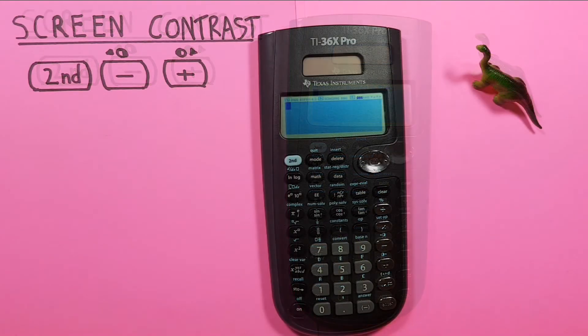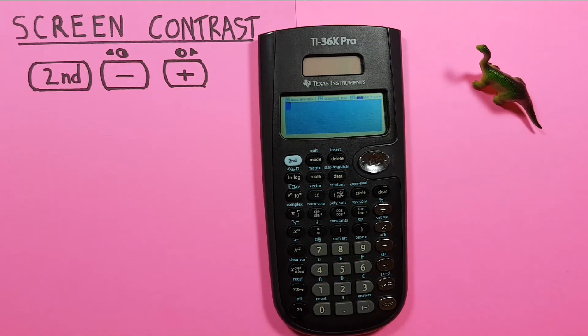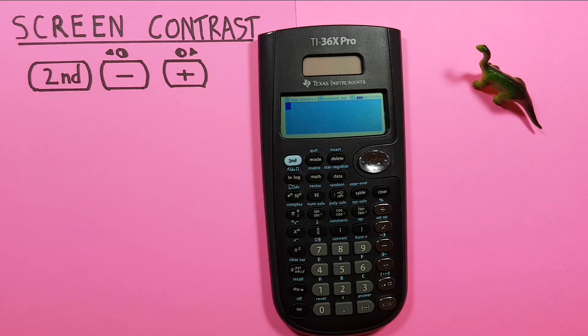You can use the plus and subtract keys to adjust your contrast as you would like, or if it's either turned all the way up or all the way down and you want to return it to its standard or normal contrast, you can reset your calculator.